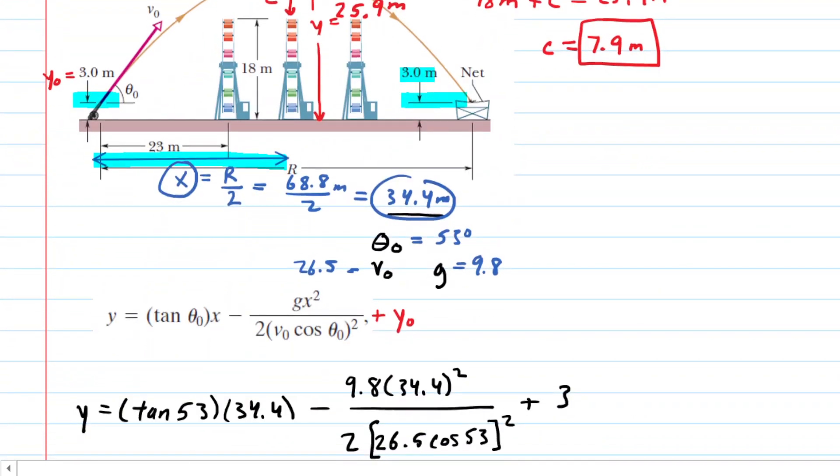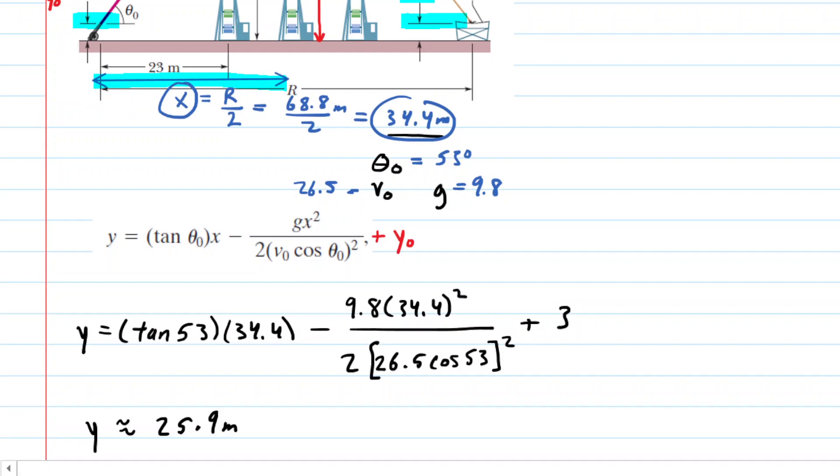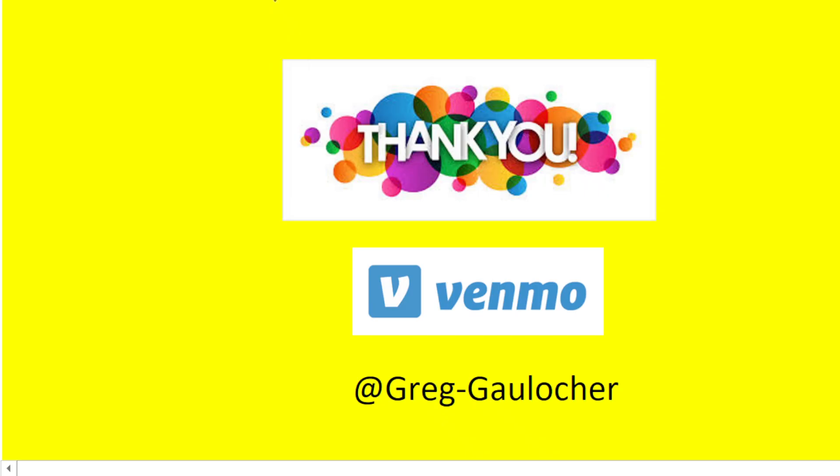When we used the range equation, we had gotten R to equal approximately 68.8 meters. That's it. That's the correct answer to part C. It is simply the range or the distance between the launch point and where the center of the net was located. Thanks for taking the time to watch the video. If you're interested in making a small donation to my cause, I'd greatly appreciate it, but please do not feel obligated to do so.